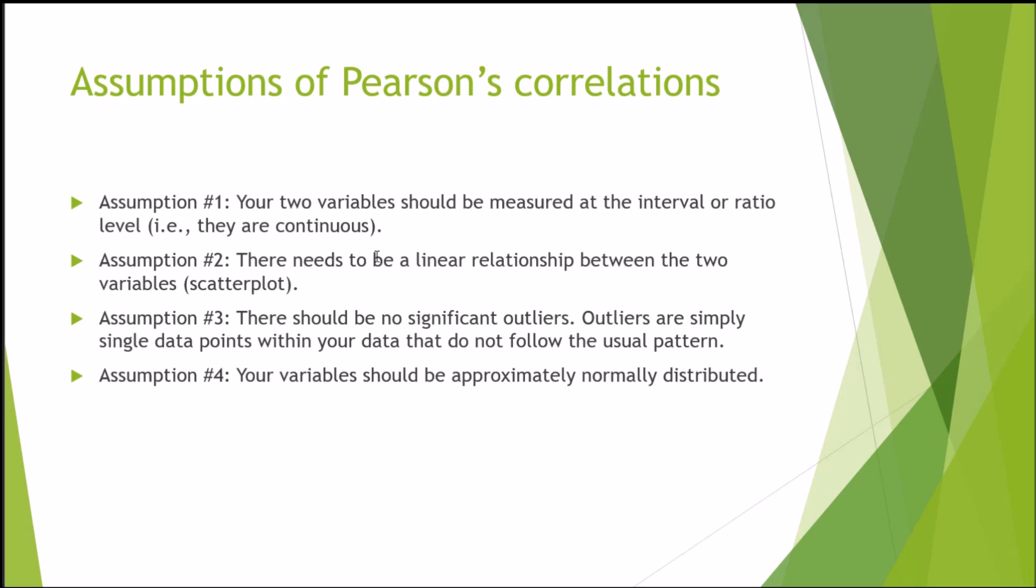You can actually visualize the type of relationship that exists between these two variables. Assumption three, there should be no significant outliers. Outliers are simply single data points within your data that do not follow the usual pattern, and correlations are extremely sensitive to outliers. Assumption four, your variable should be approximately normally distributed.